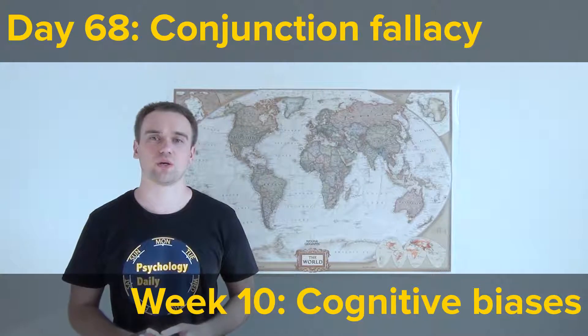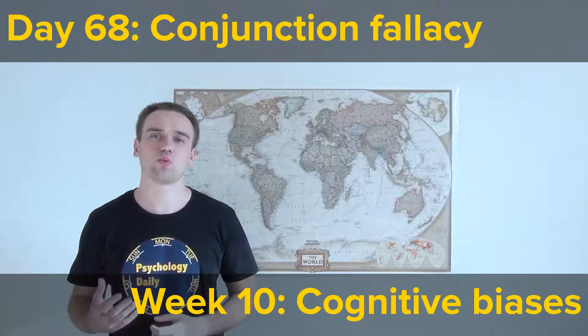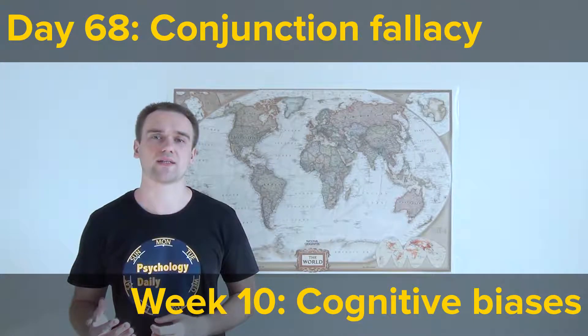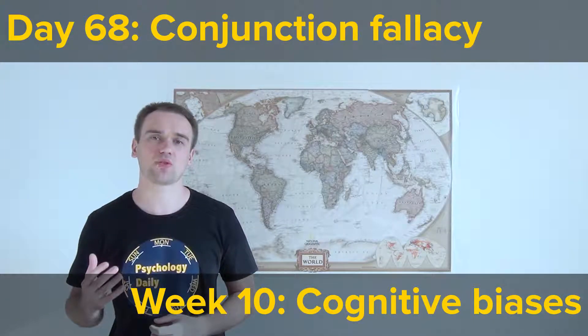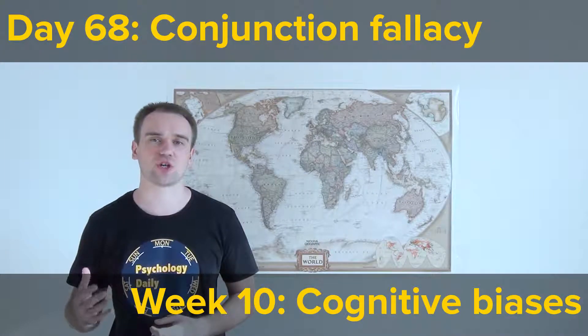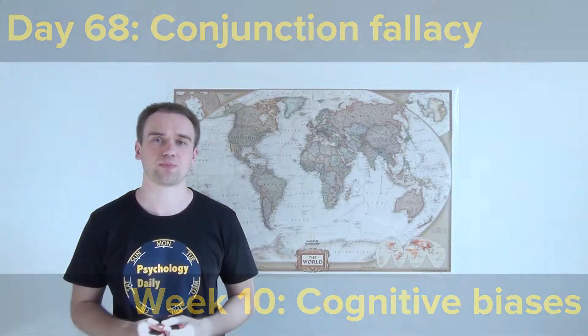Welcome to Psychology Daily. We continue the week on cognitive biases, and today I will tell you about conjunction fallacy. This cognitive bias is based on probabilities, and that is why it is easier to show why it leads to incorrect thinking. Let's start.